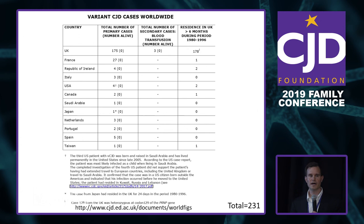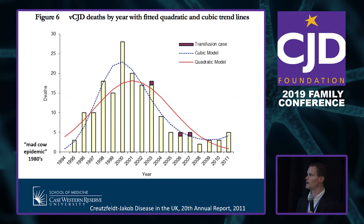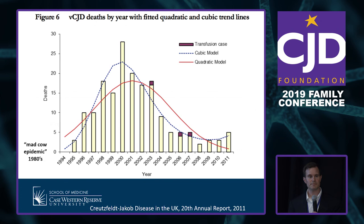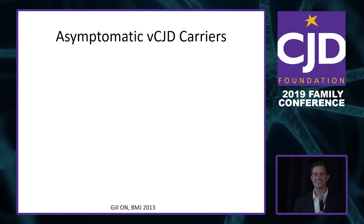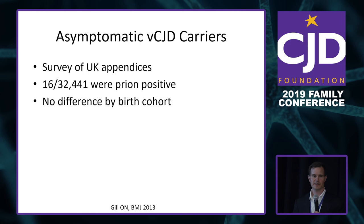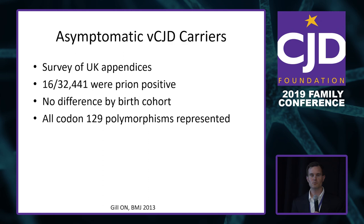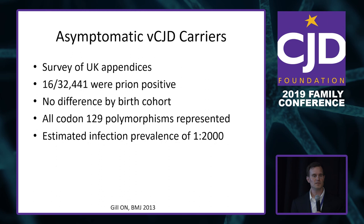The mad cow epidemic started in the 1980s — it was essentially man-made because we were refeeding cattle to each other. Once that was stopped in 1996, the mean incubation period of about 10 years means cases have steadily declined but will continue to appear sporadically for years. A study of appendices — where variant CJD can reside — suggests about one in 2,000 people in the UK could be silently incubating the disease.